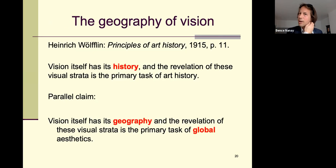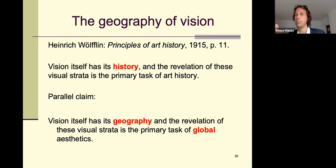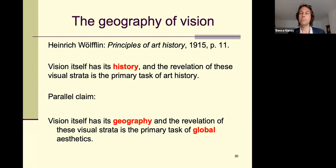The takeaway is that because your vision really depends on the kinds of things you've seen before, the idea of a 'history of vision' actually makes sense. Wölfflin famously said 'vision itself has its history, and the revelation of these visual strata is the primary task of art history.' We can make a parallel claim not about history but about the geography of vision: different people in different parts of the world have been exposed to very different stimuli and as a result see the same thing differently.